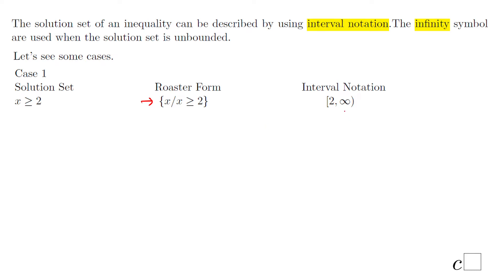Look here at the interval notation. You notice we have a bracket — the bracket is open towards the first solution in the solution set, two, then a comma, and then we have the infinity symbol. Always, when you have infinity or negative infinity, you have to use parentheses.